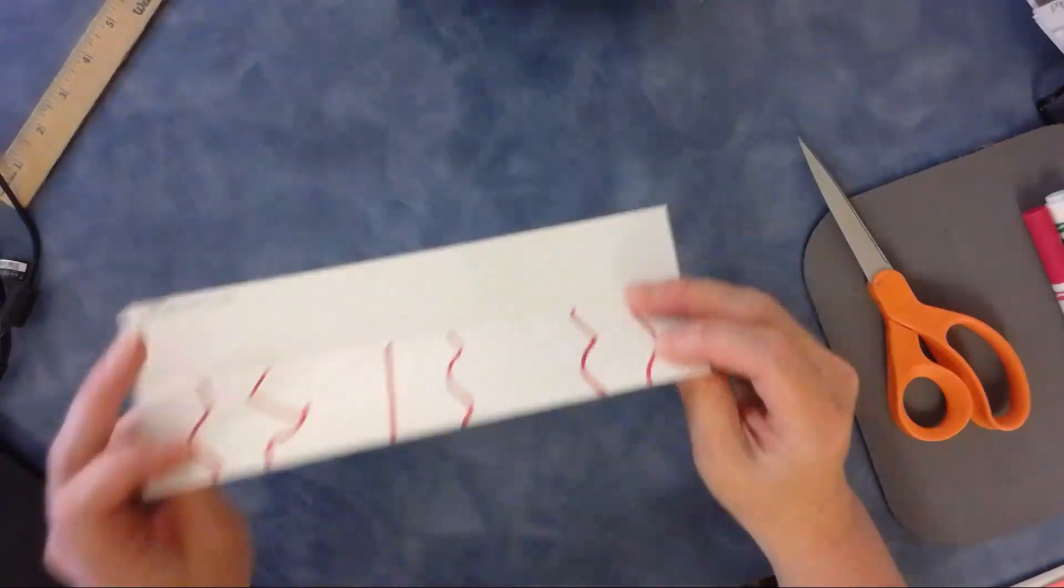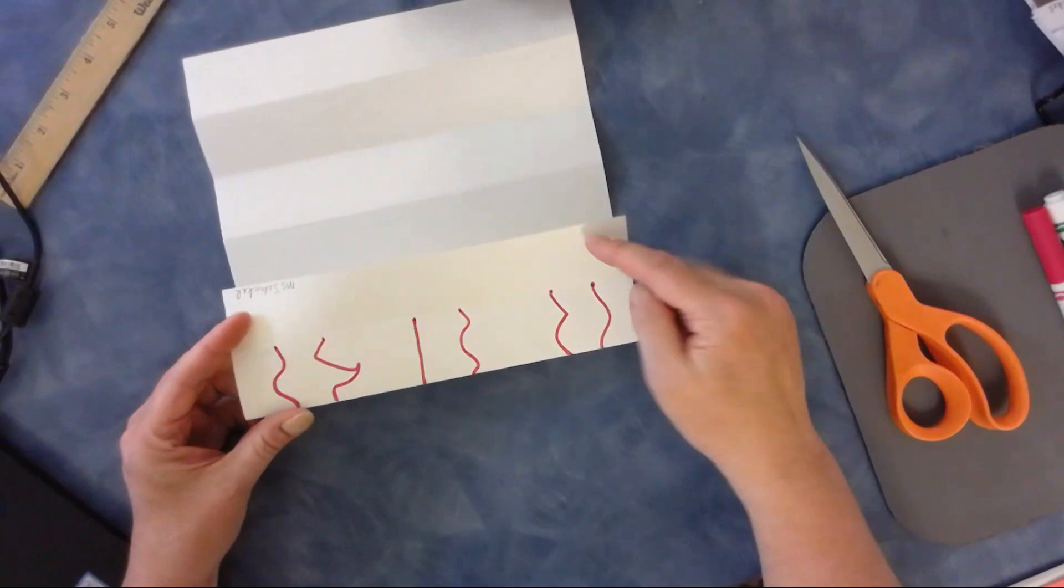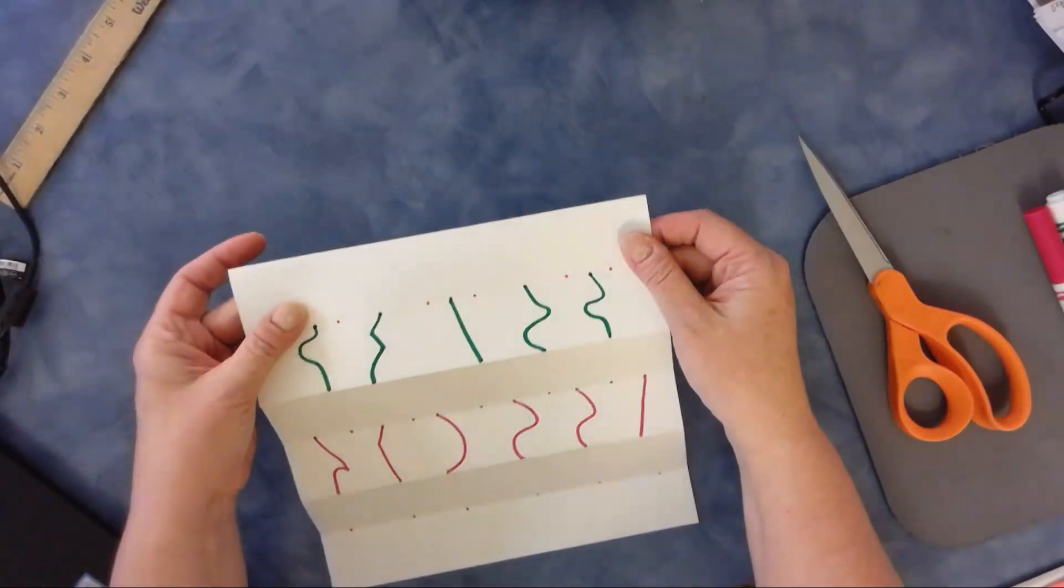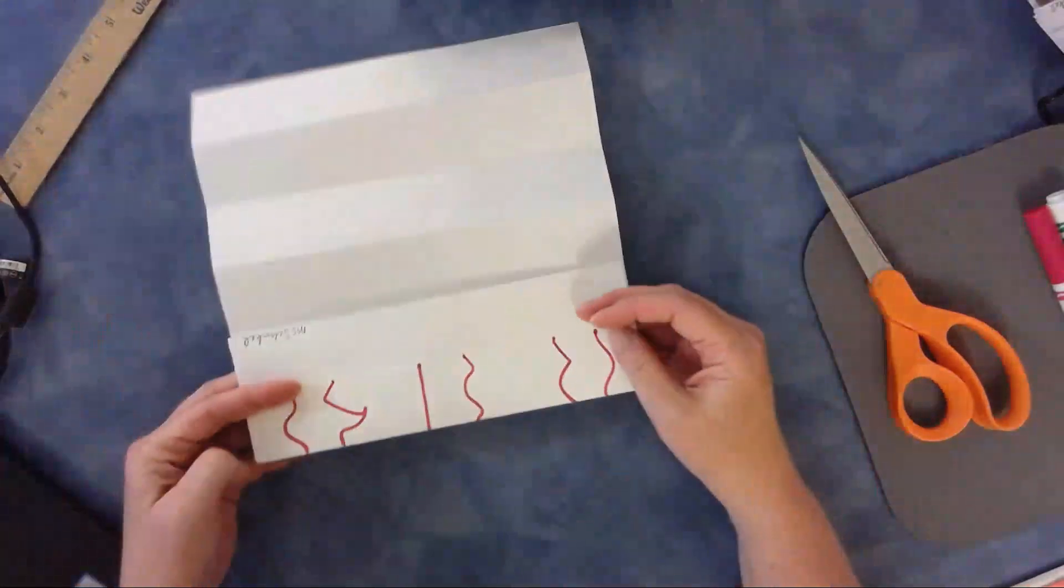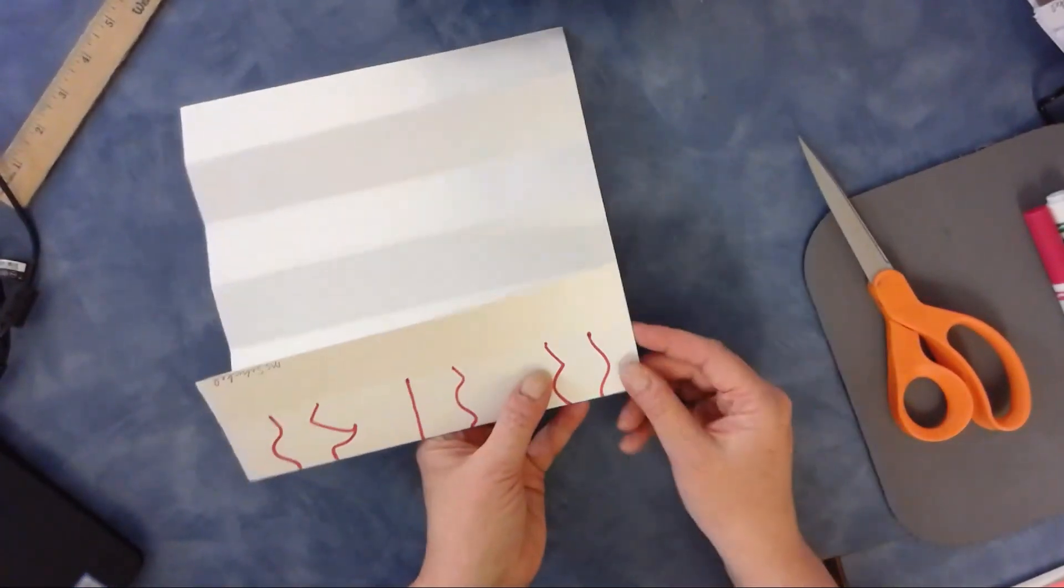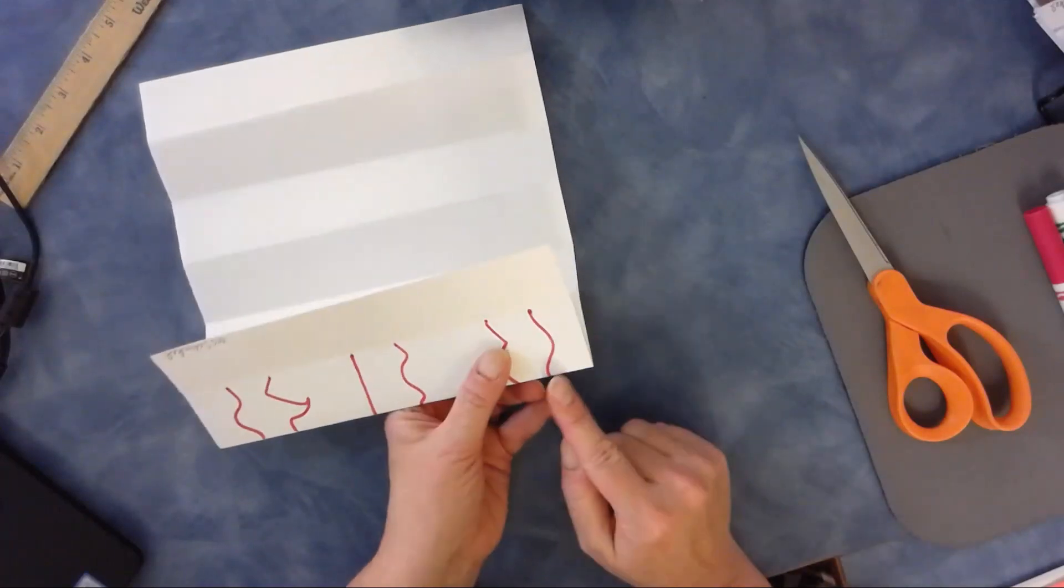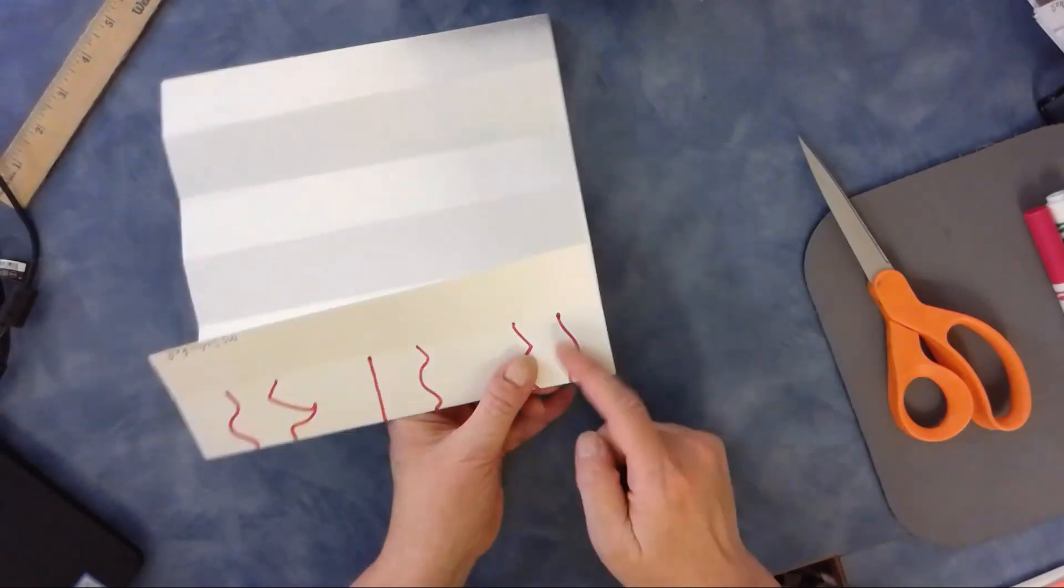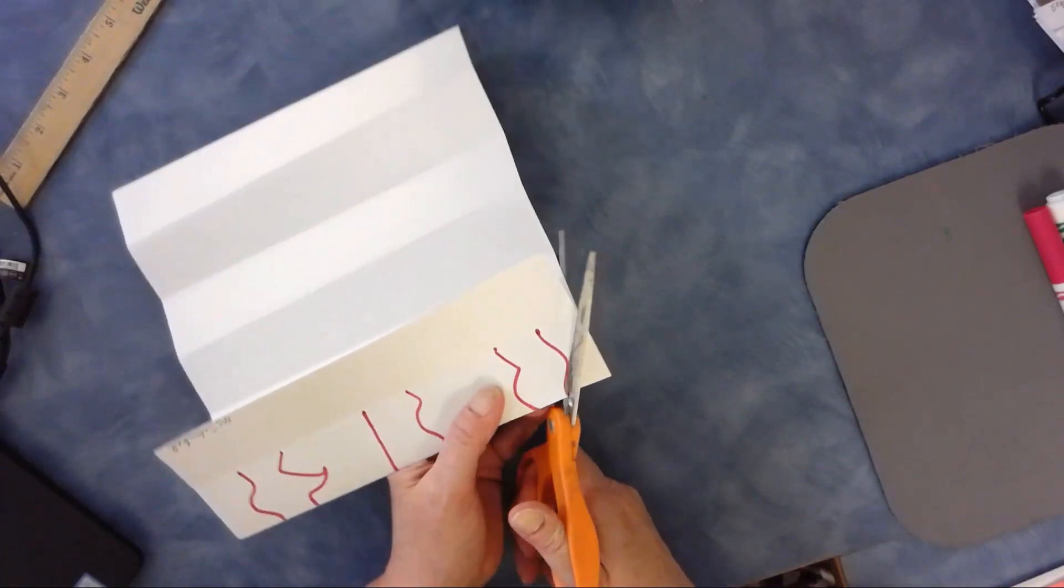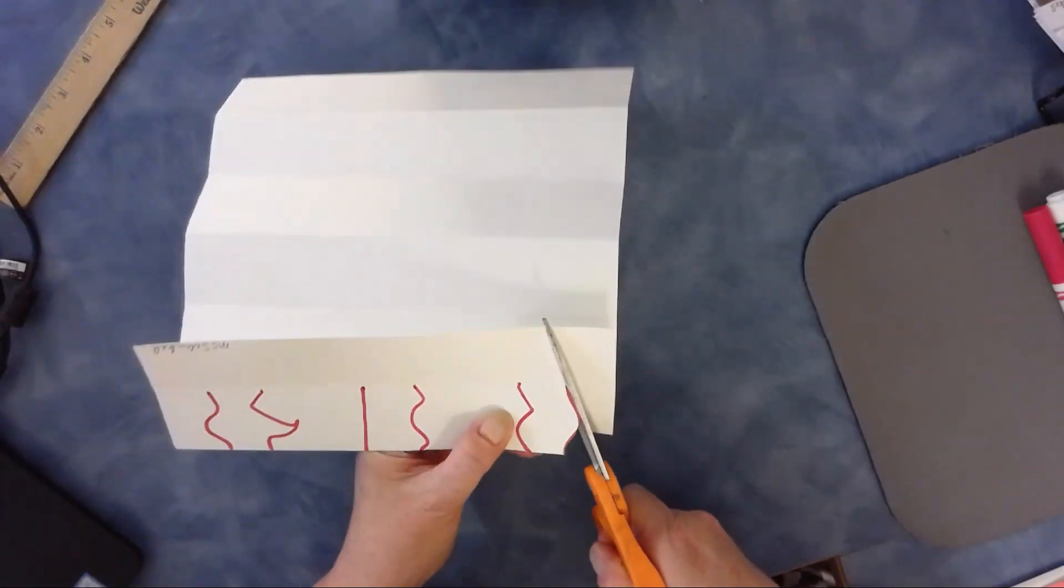My first step is I'm going to fold back so I see the first two strips. The other side will look like this, so I've got the first two strips here and I am going to cut from the fold to the dot.